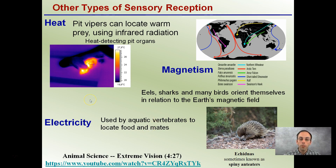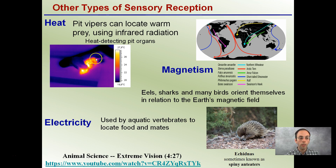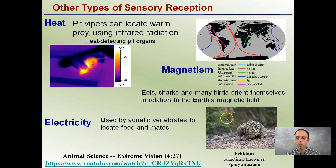Other types of sensory receptors that we may not sense ourselves include heat receptors, very evident in pit vipers. We see here a snake that can locate warm prey using infrared radiation — these heat-detecting pit organs allow the snake to find a mouse, which appears very warm. Magnetism is used by eels, sharks, and many birds, which orient themselves in relation to the Earth's magnetic field, allowing them to migrate along certain routes over long distances. Electricity is used by aquatic rays to locate food and mates, and also by some terrestrial organisms — spiny anteaters, for example, also use electricity to help sense food.